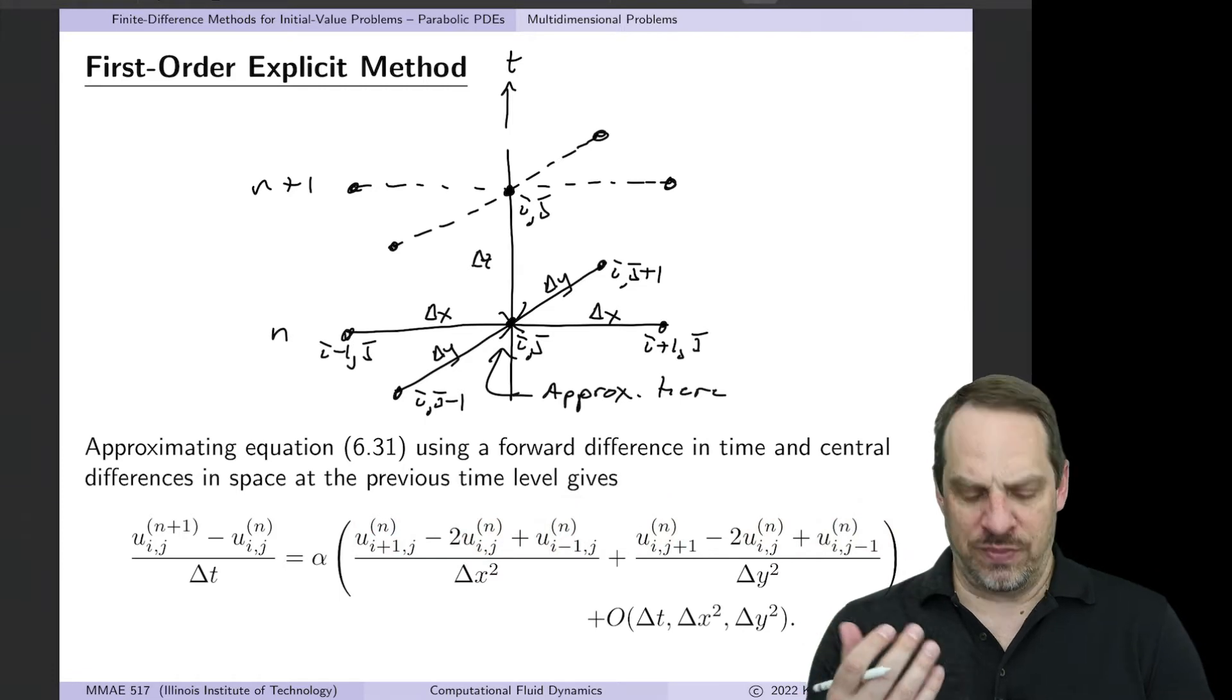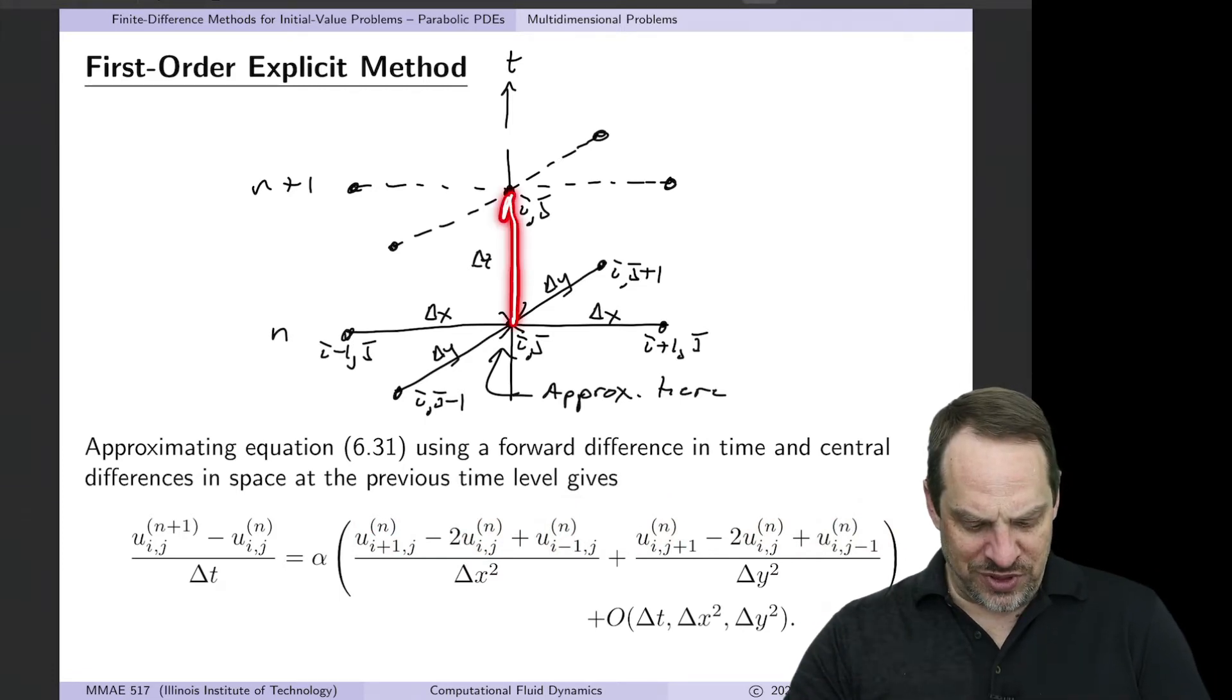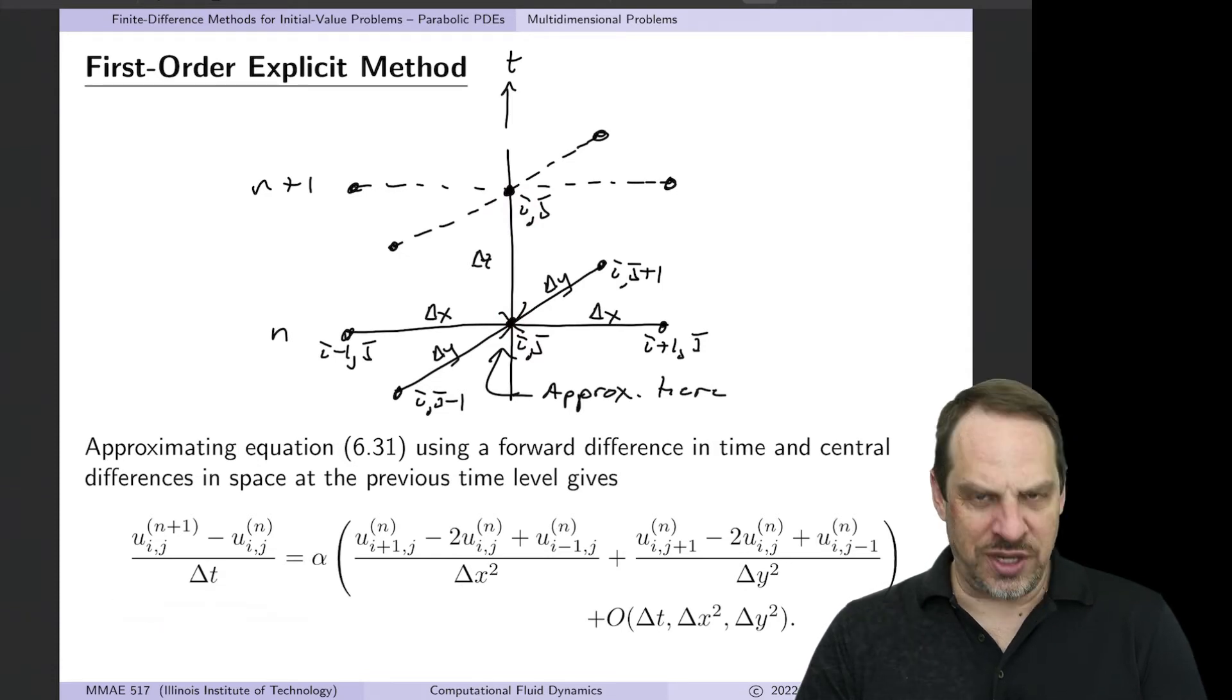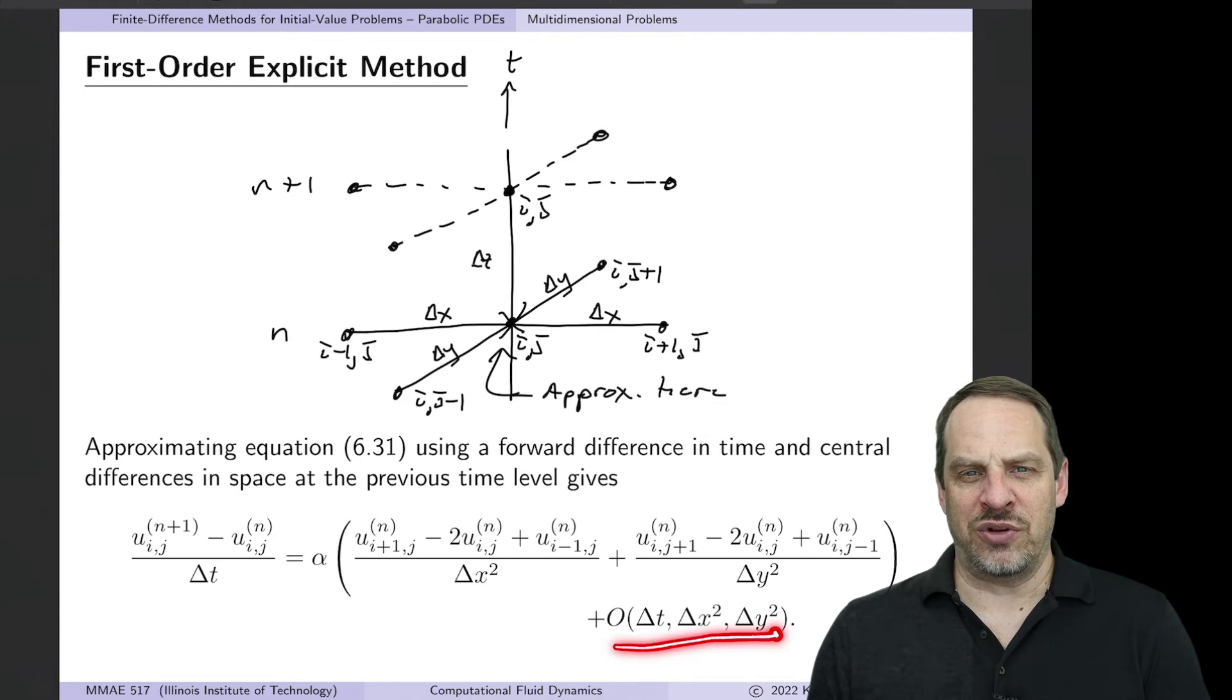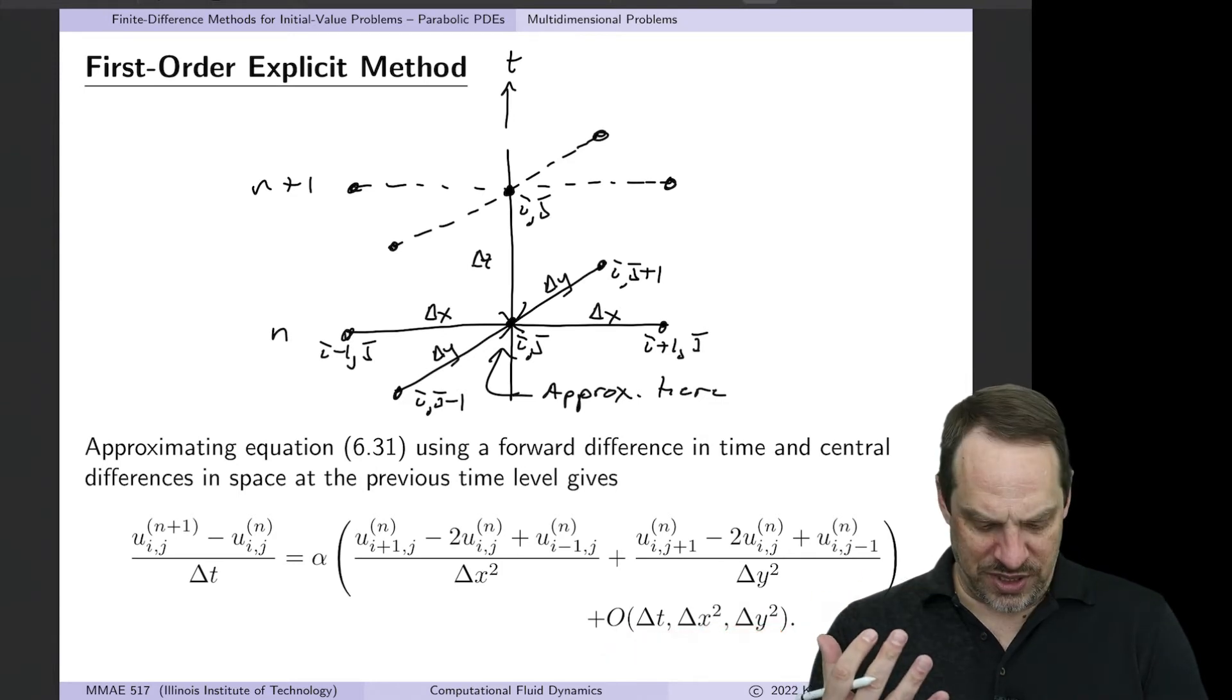You'll notice all of these are at the previous nth time level, where we know the solution. And then we use a forward difference in time, which is only first-order accurate. It's uij n plus one minus uij n over delta t. It's only first-order accurate, you see that down here. Second-order accurate in space, first-order accurate in time. Just like in the 1D case.